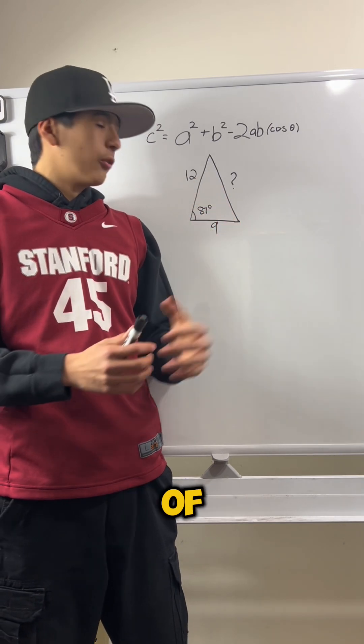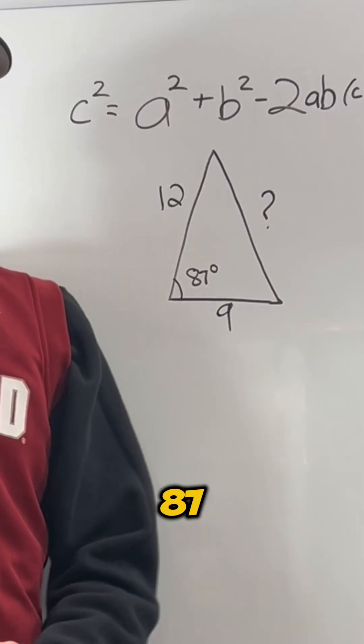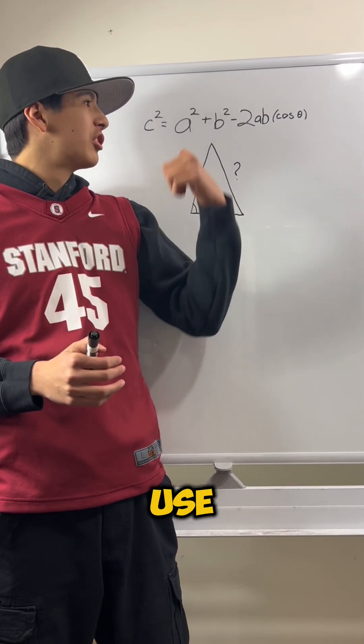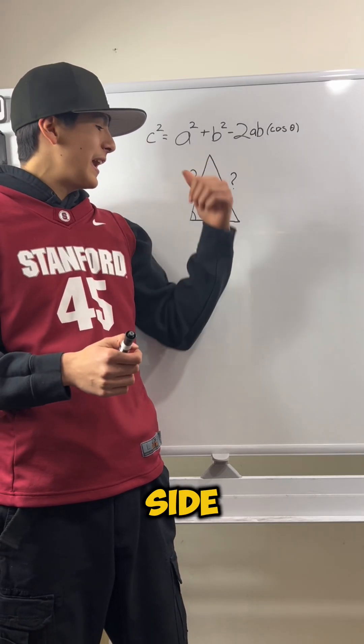Now, here's an example of how we could actually use it. So this triangle has an angle of 87 degrees, which means we can't use the Pythagorean theorem. So we have to use the law of cosines to find this side. So let's label this side A and this side B.